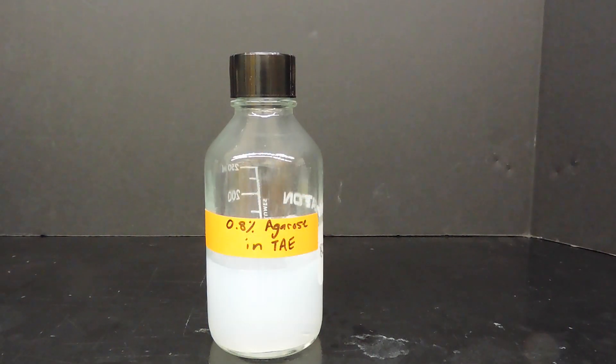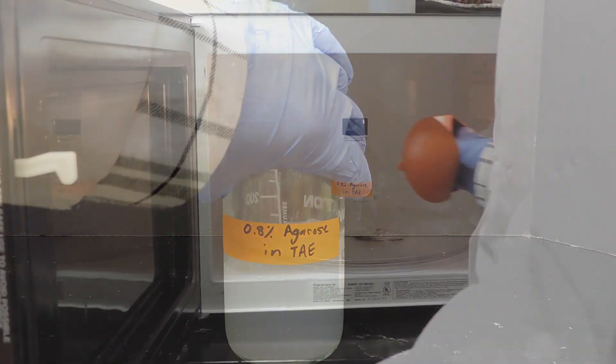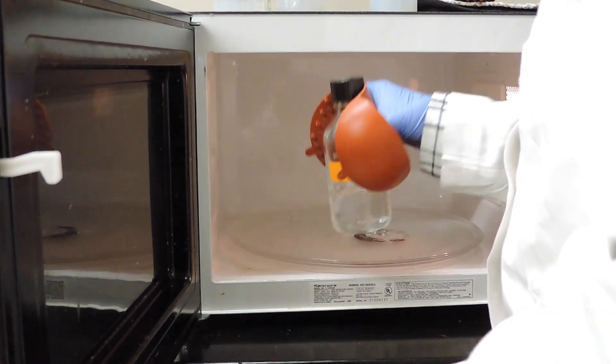First, we prepare an agarose gel. Melt the 0.8% agarose and TAE solution using a microwave until it looks as clear as water.